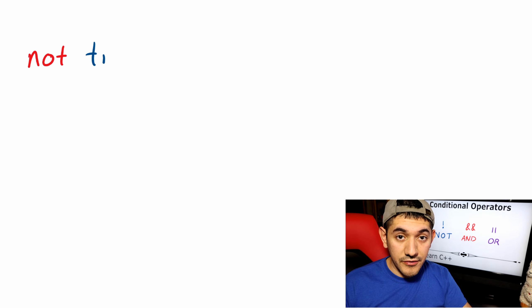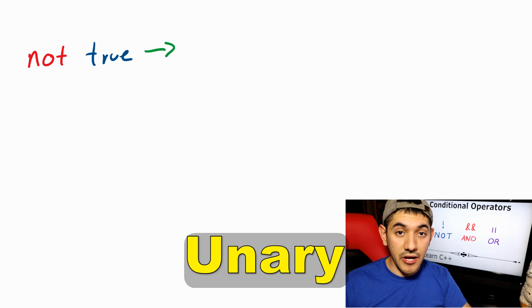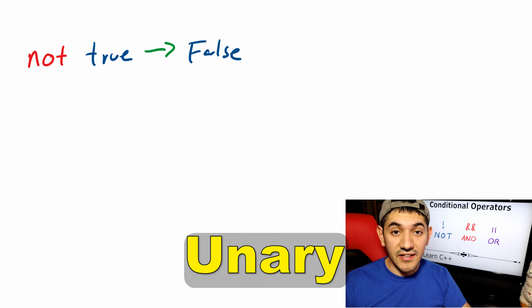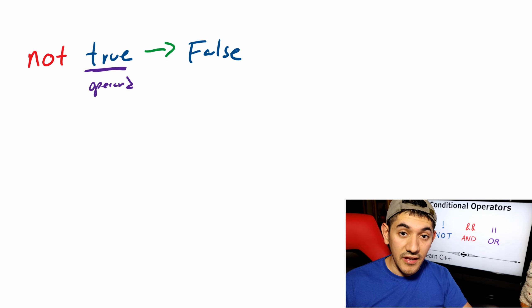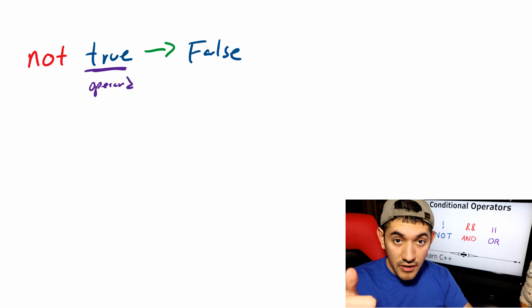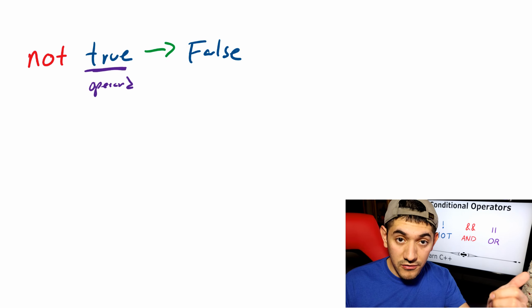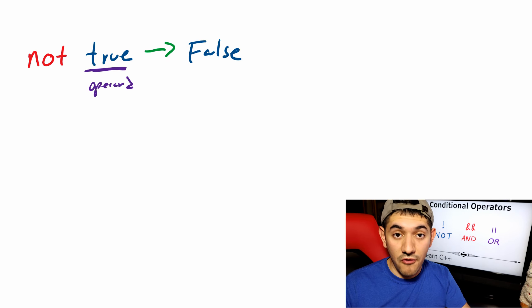The not operator is called a unary operator because it only takes one operand in order for it to apply the operation. It takes a true and produces a false, or it takes a false and produces a true.